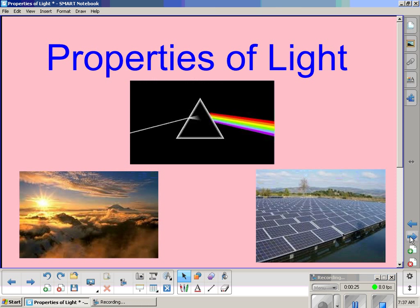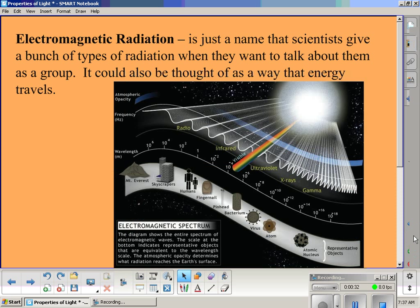So what we're talking about today is the properties of light. Let's start out with a definition of electromagnetic radiation, and I've watered it down a bit to make it seem more simple. It's just a name that scientists give a bunch of types of radiation when they want to talk about them as a group. It could also be thought of as a way that energy travels.